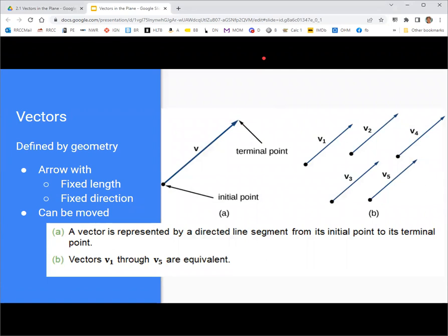So the first way you want to think about vectors is they have a fixed length and a fixed direction. So two aspects of them. We often represent them by arrows. Obviously, the arrow points in the direction, and then the length of the arrow is the magnitude of the vector. Now, you can move it around, and it can still be the same vector. You see these vectors v1 through v5 are all the same because they're all the same length, and they're all pointing in the same direction.